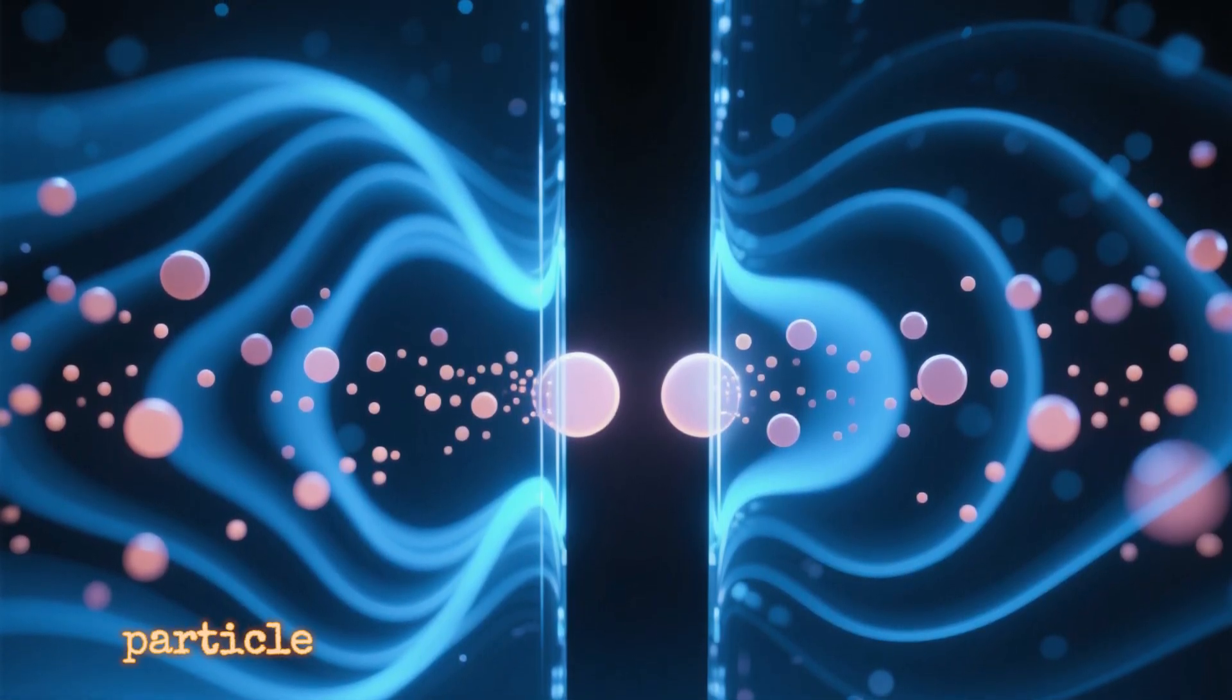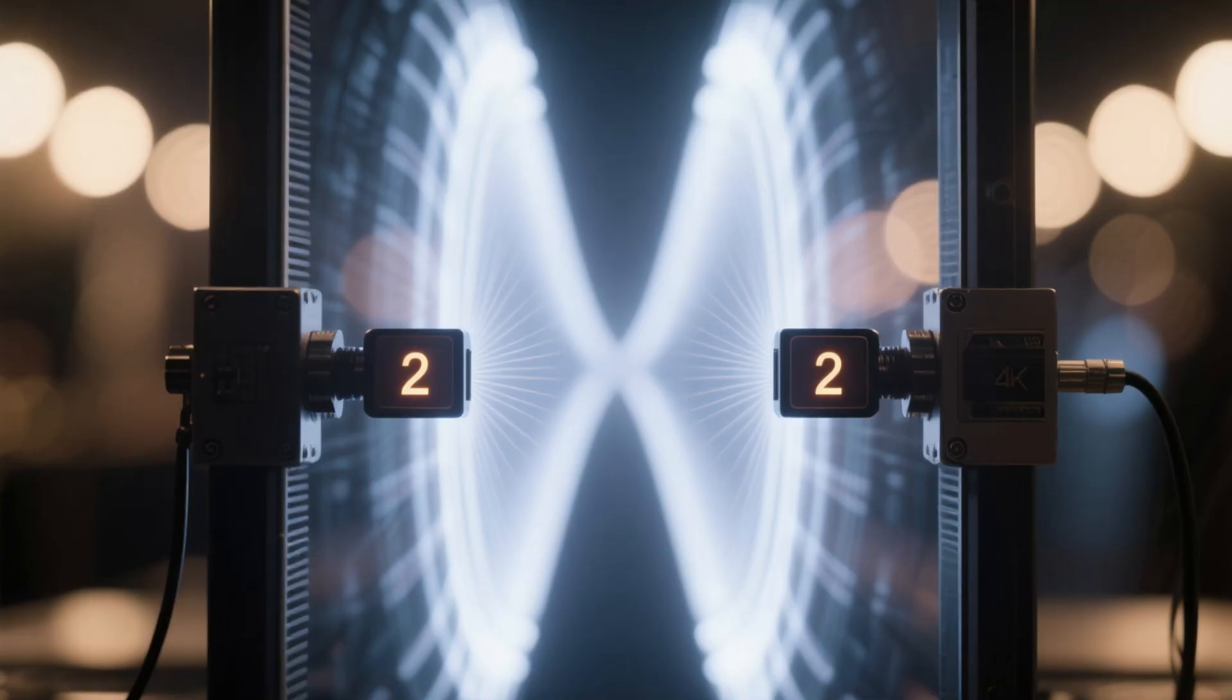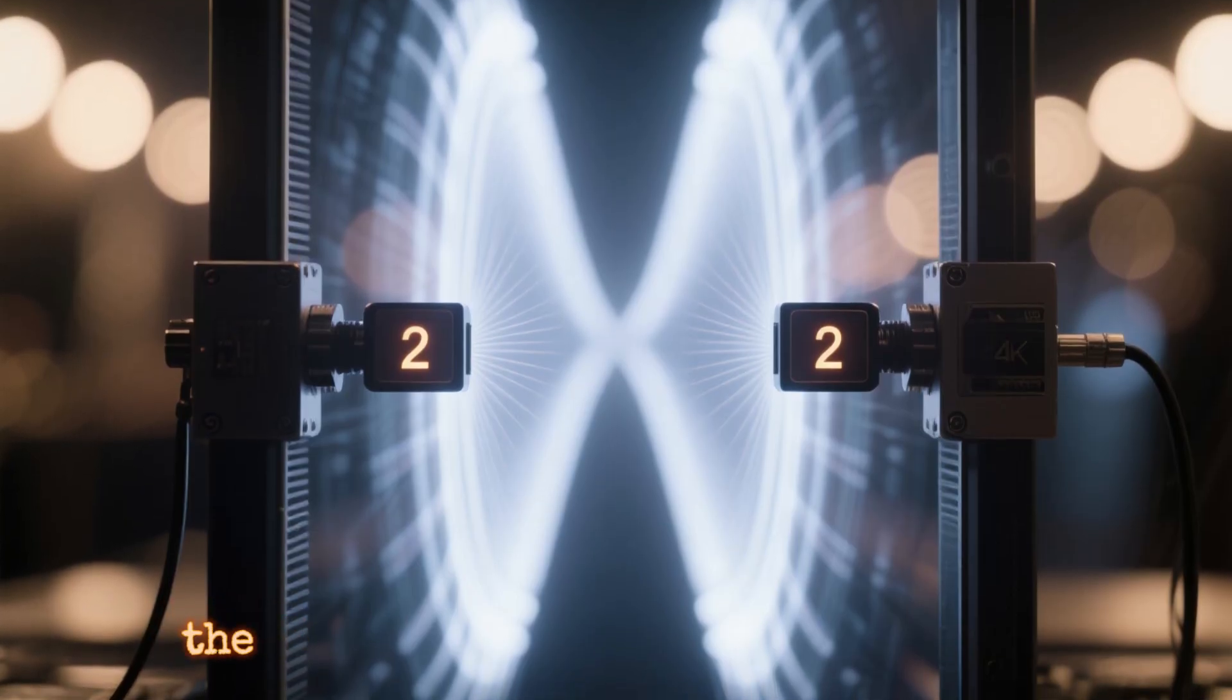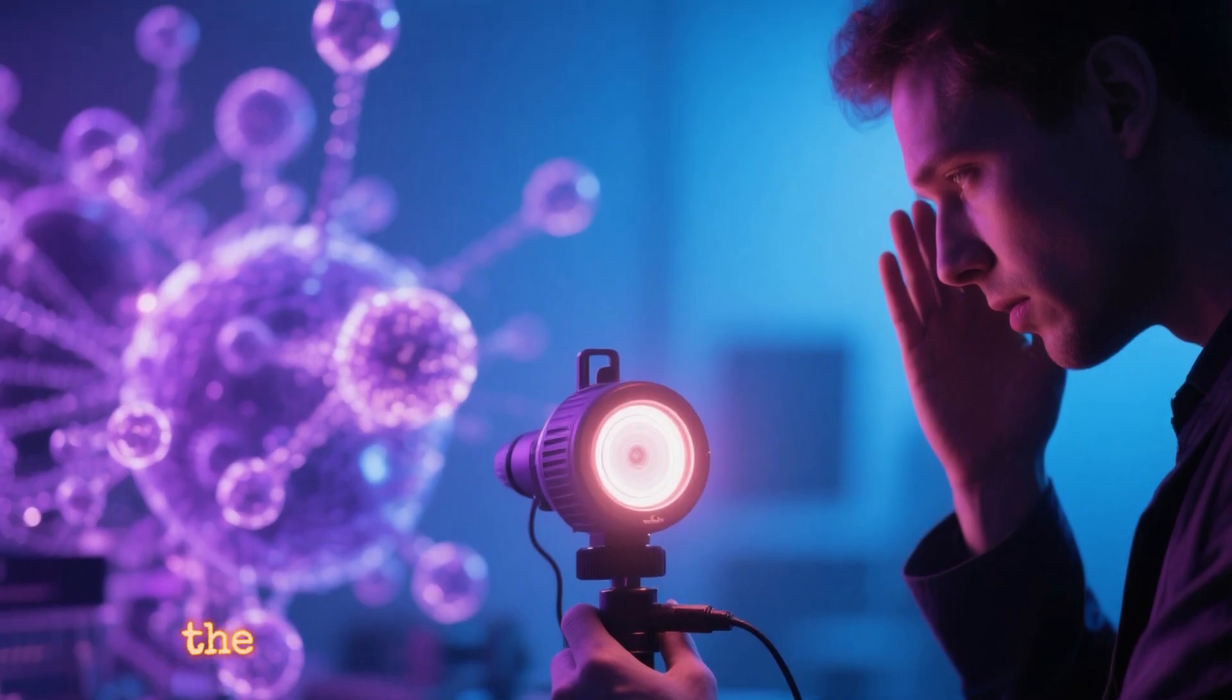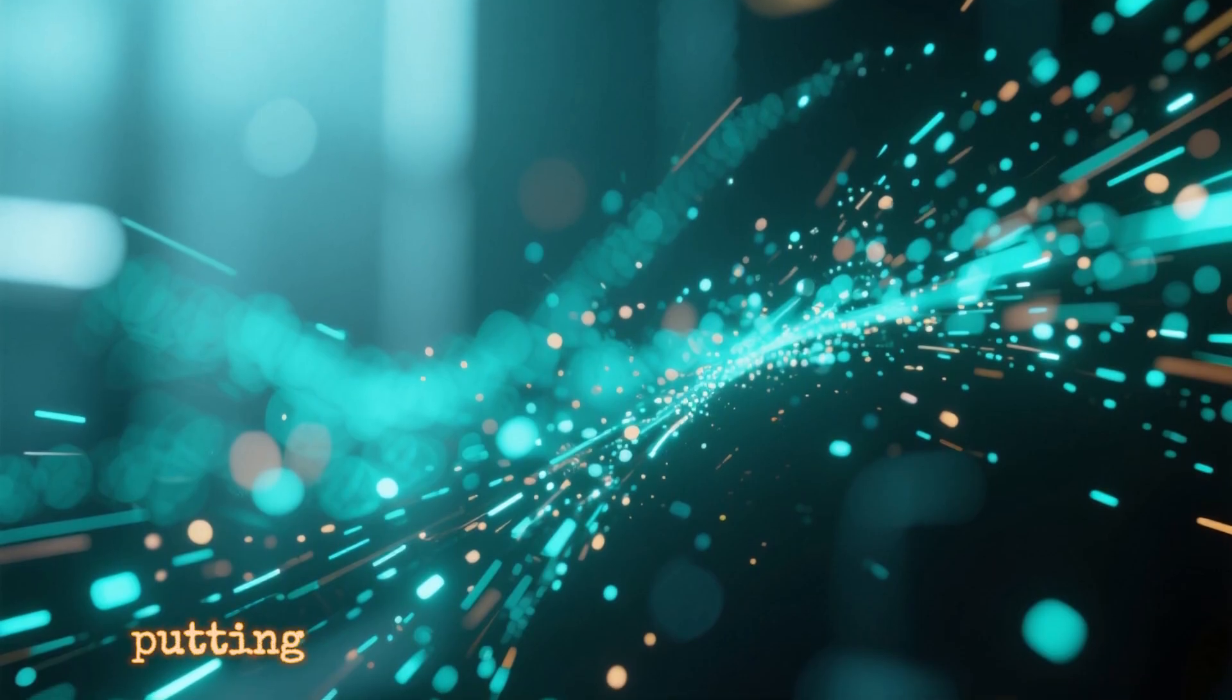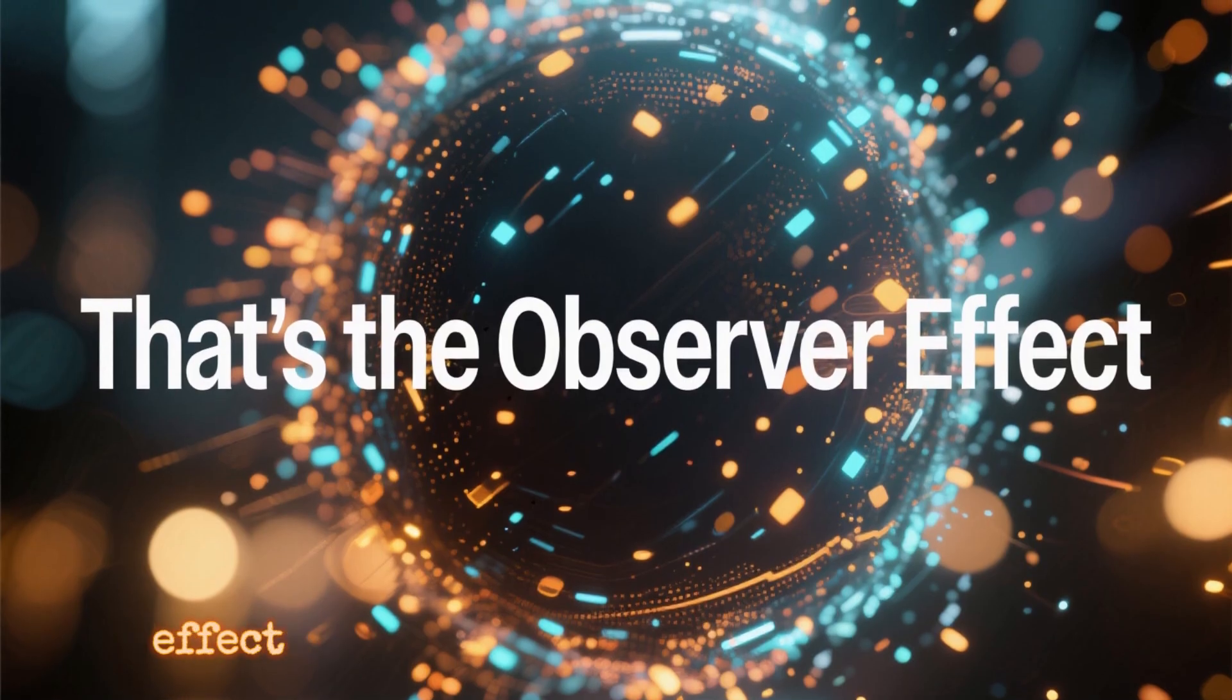You shoot one particle at a time through the slits, and each time you get an interference pattern. But if you put detectors at the slits to measure which slit the particles go through, then the interference pattern goes away. Whether or not you look at the detector is irrelevant. The very act of putting the detector there changes the behavior of the particles. That's the observer effect.